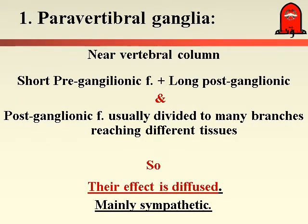The paravertebral ganglia are present near the vertebral column, so they have short preganglionic nerve fibers because the ganglia is close to the spinal cord. But the postganglionic nerve fiber — going from the ganglia to supply the organ — will be very long, sometimes divided into many branches. So stimulation of these ganglia produces a diffuse effect, distributed to many organs or tissues. Most of the paravertebral ganglia have sympathetic nerve function.